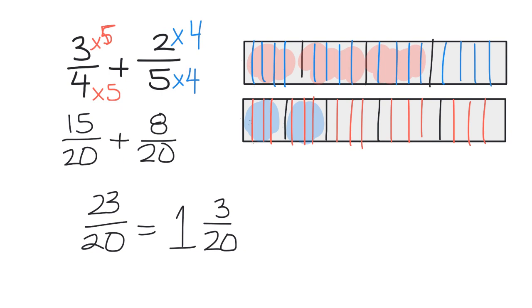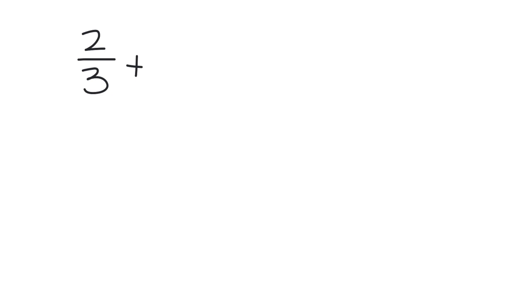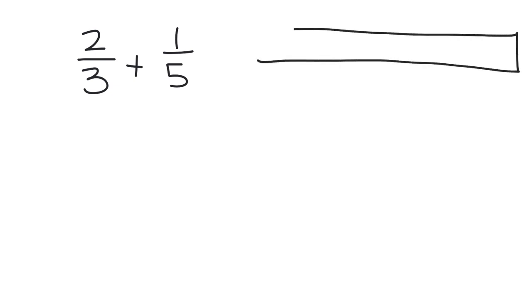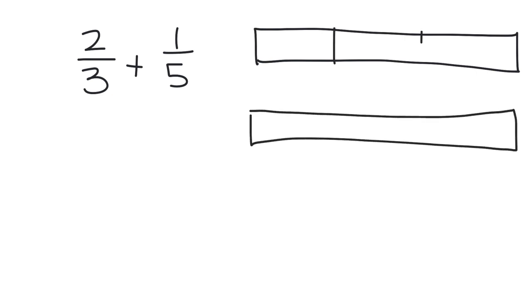Let's do one more example: two-thirds plus one-fifth. So there's our two-thirds plus one-fifth. I'm going to quickly sketch out two-thirds plus one-fifth. You'll notice I'm not going to be as tidy at this point because I'm trying to slowly get us towards the standard algorithm. Here's our two-thirds. Here's our one-fifth. We want to cut these into equal intervals because right now our pieces are not equal — thirds are much bigger than fifths.